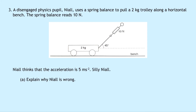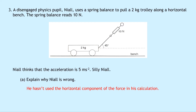Question 3 says that a disengaged physics pupil Niall uses a spring balance to pull a 2 kilogram trolley along a horizontal bench. The spring balance reads 10 newtons, pulling the trolley at an angle of 45 degrees to the horizontal, and Niall thinks the acceleration is 5 meters per second squared. Part A says explain why Niall is wrong. He hasn't used the horizontal component of the force in his calculation — he used A equals F over M to get 10 over 2, using the 10 newtons of the resultant force rather than the horizontal component, which is what we need to work out the acceleration.